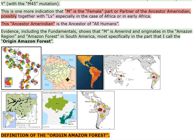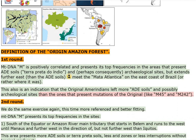Definition of the origin Amazon forest — first round. MtDNA-M is positively correlated and presents its top frequencies in the areas that present ADE soils, Terra Preta do Indio, and perhaps consequently, archaeological sites, but extends further east than the ADE soils to meet the Mata Atlantica on the east coast of Brazil, or rather where it was. This is also an indication that the original Amerindians left more ADE soils and possibly archaeological sites than the ones that present mutations of the original, like M45 and M242.